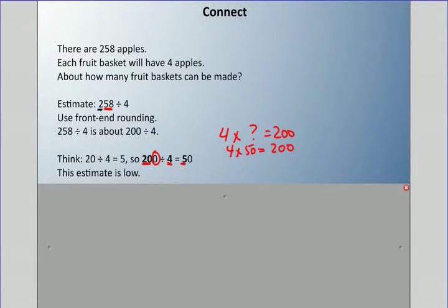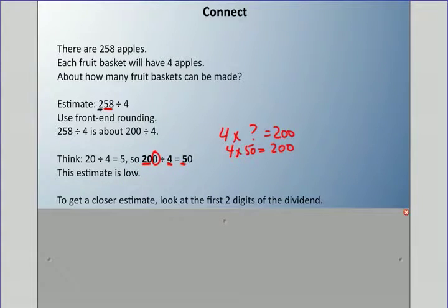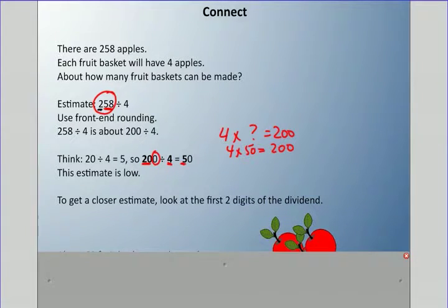Front-end rounding is an underestimate, and it's significantly lower because 258, we're going down 58 apples, that's a lot of apples. This isn't always the most effective way to divide. It's an approximate answer but it's going to be a really underestimate. So we can look at the first two digits of the dividend. The dividend is the number at the front here, so 258 is the dividend.